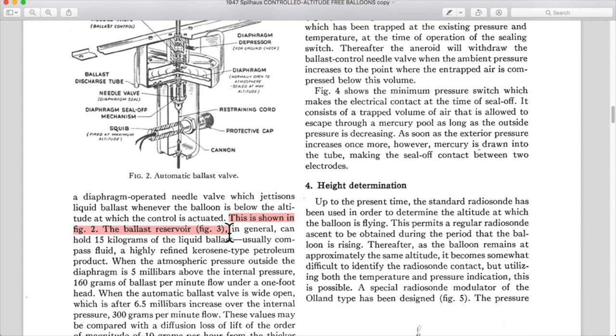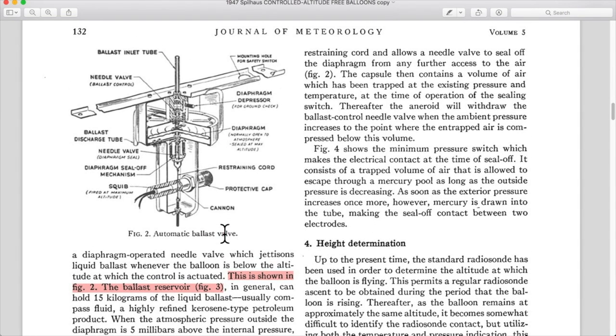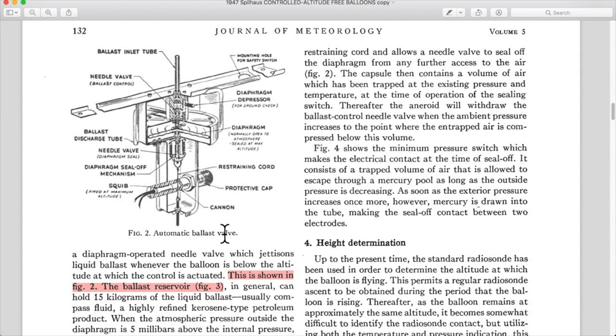This is shown in figure two. The ballast reservoir in general can hold 15 kilograms of liquid ballast, usually compass fluid, which is a highly refined kerosene type petroleum product. When they say compass fluid, it was actually used in magnetic navigation compasses for ships and airplanes to keep the needle or the dial in there from swinging around rapidly.